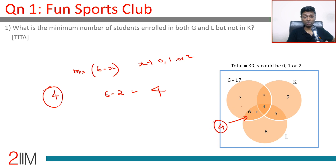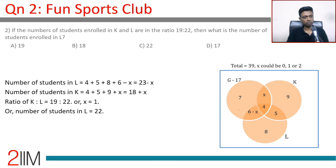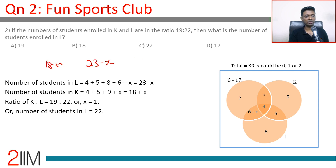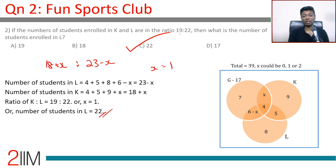Next question: If the number of students enrolled in K and L are in the ratio 19 to 22, what is the number of students enrolled in L? L is 23 minus x and K is 18 plus x. The ratio 19:22 means L equals 22 and K equals 19, which gives x equals 1. Actually, since we're dealing with integers and the ratio is 19:22, the only possibility is L equals 22.